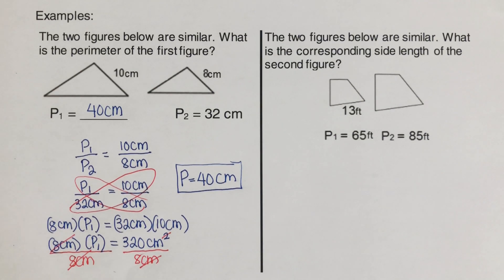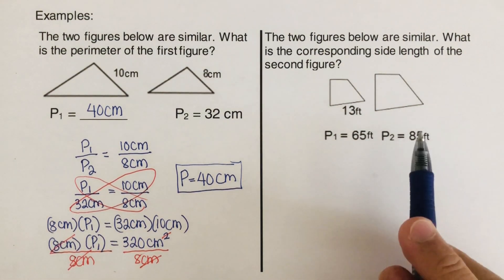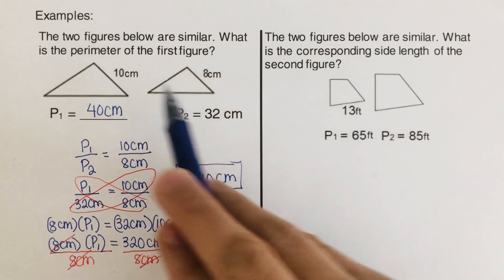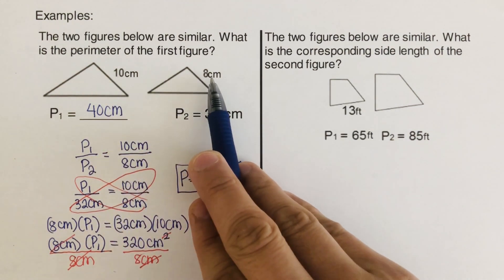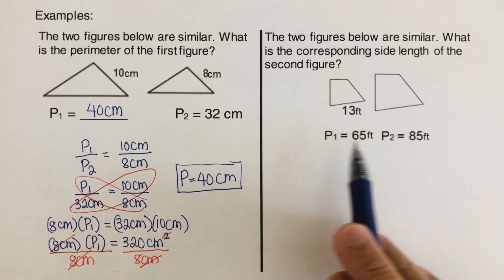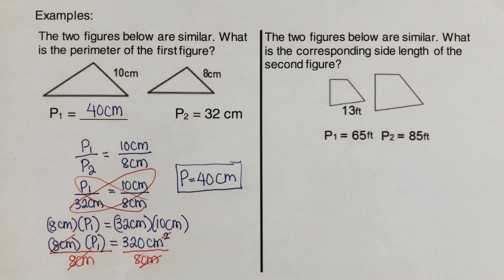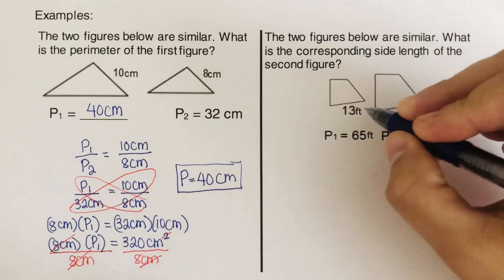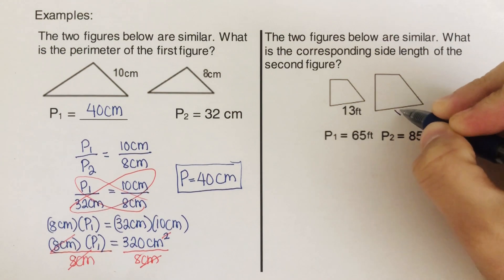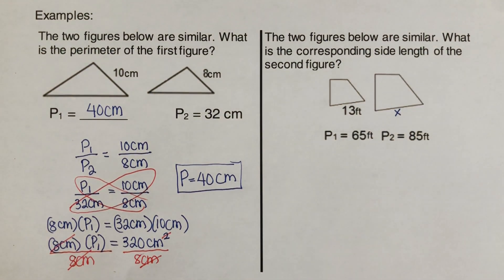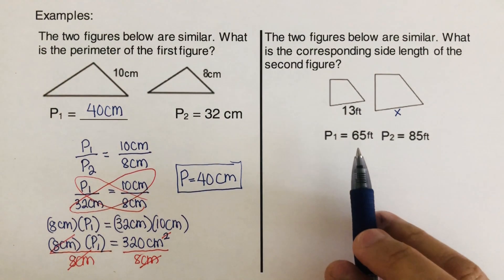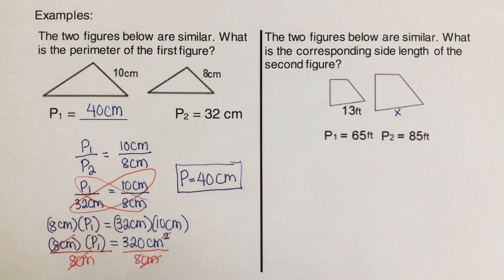Okay, let's go over this problem. These two figures are similar, and we need to find the length of the corresponding side. We always remember that sides must be corresponding in order for the ratio of their parameters to be equal. The corresponding side to 13 feet is the unknown side, which I'll call x.